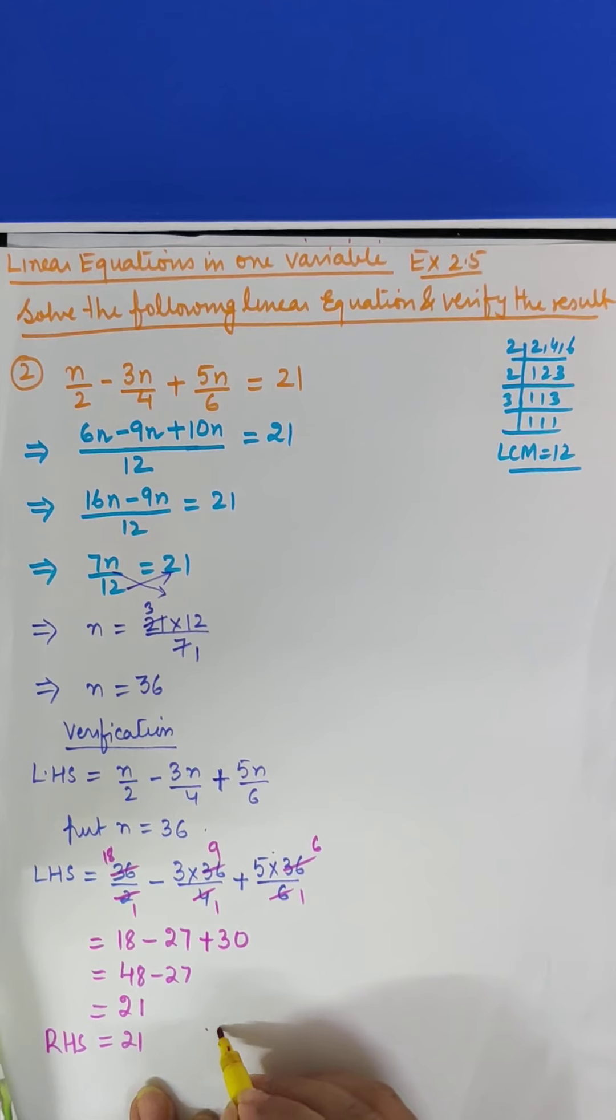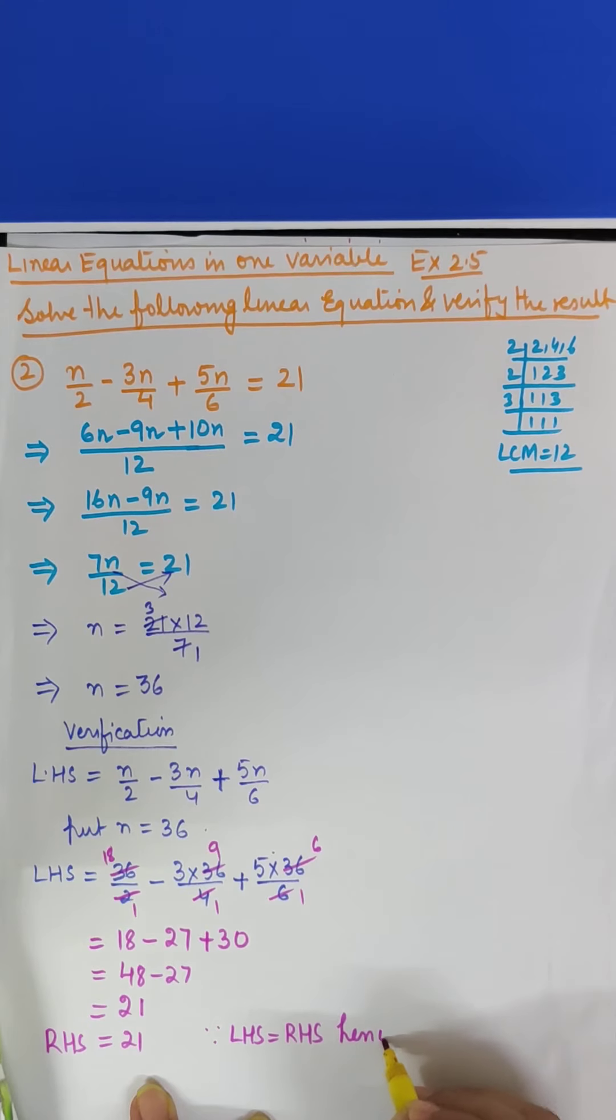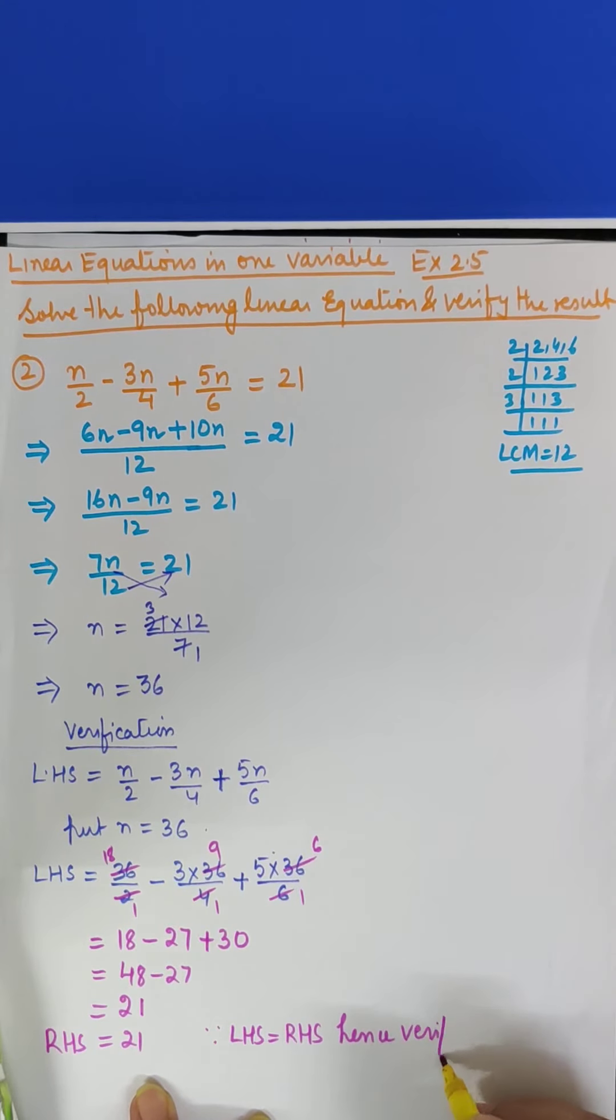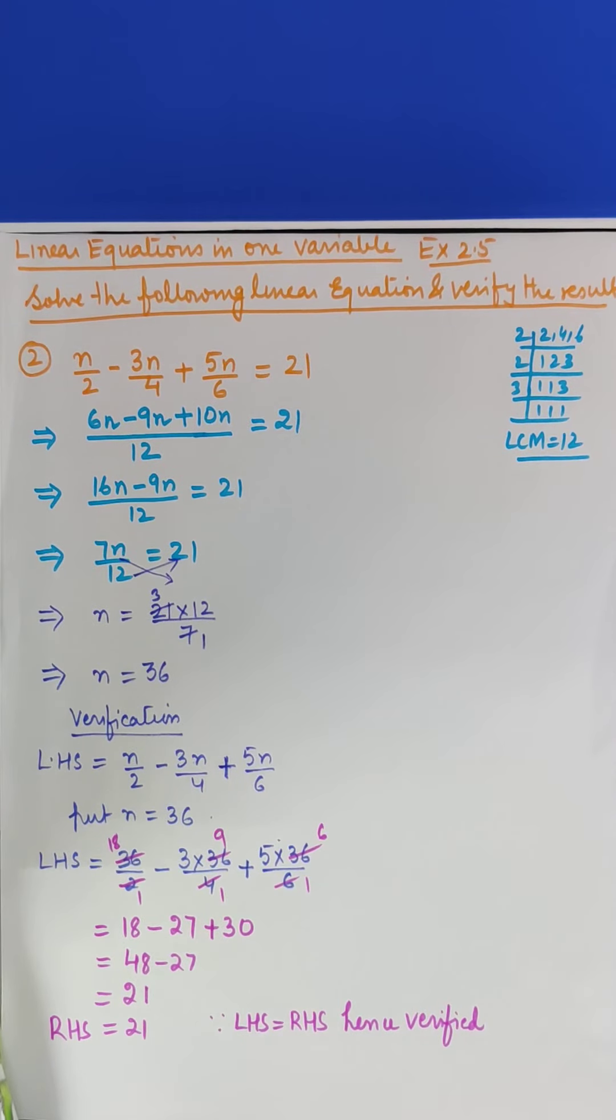So what will we write? Since LHS is equal to RHS, hence verified. Is it clear? So with this I wind up, in the next class I shall take up question number 3.